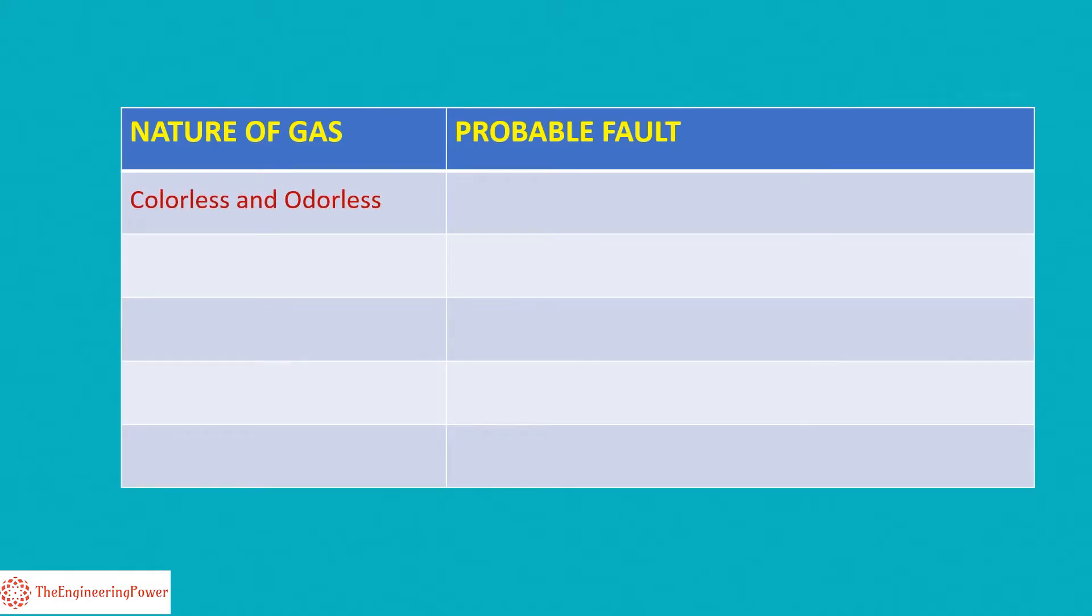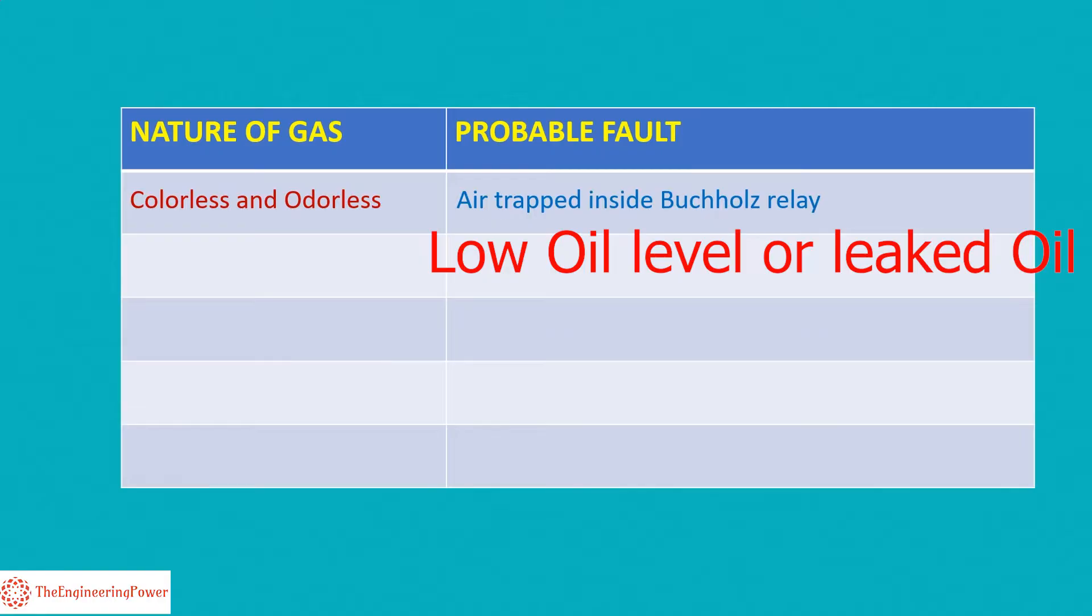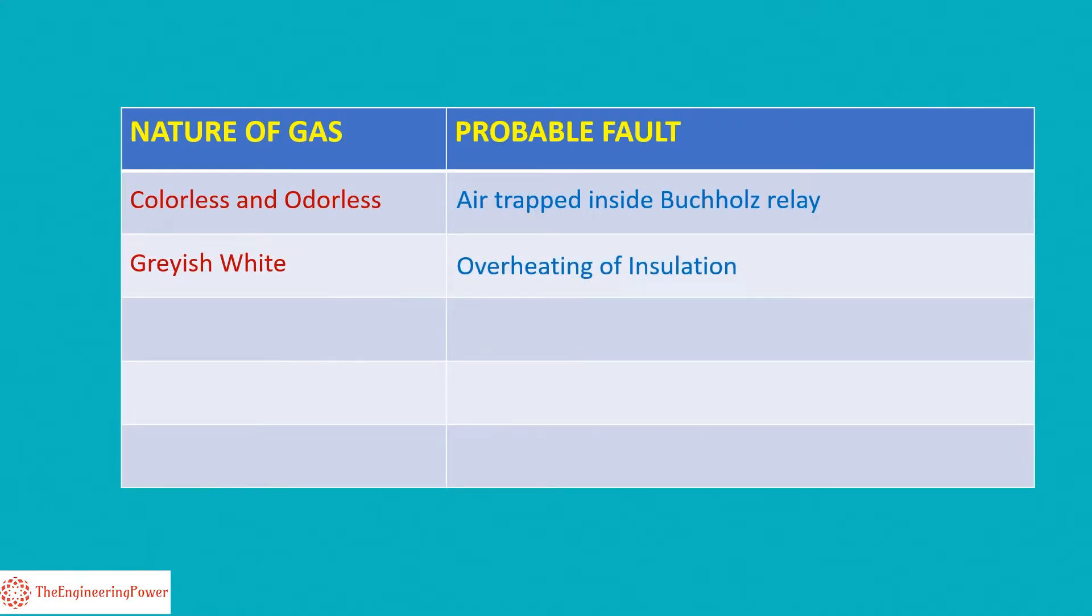When the gas is colorless and odorless, it means that there is air trapped inside the Buchholz relay that may be due to low oil level or leaked oil. Grayish white color of the gas means that the insulation is overheated. Yellowish color of gas means decomposing of wood or cardboard insulation.